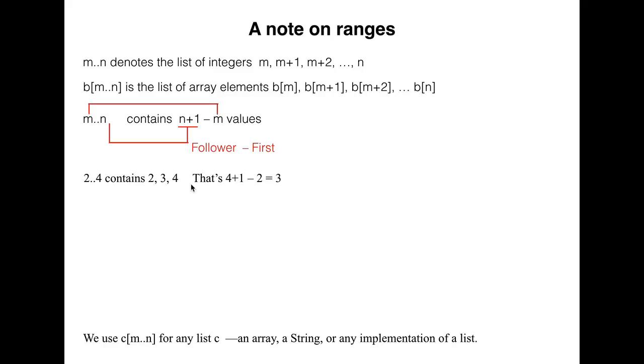2..4 contains 2, 3, and 4. That's 4 plus 1 minus 2, or 3 values. 2..3 contains 2 and 3. That's 3 plus 1 minus 2, or 2 values.